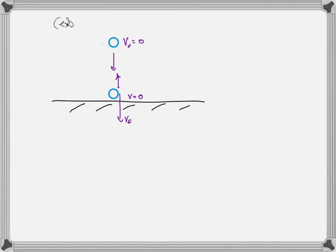What happens is it exchanges momentum with the ground, and then the ground gives it back that momentum. The energy is stored as potential energy as the ground and the ball squish. If that energy is stored in a conservative force — if the ball and ground can be treated as ideal springs — then we can say that it's conservative, and when it bounces up off the ground, all the energy is given back.